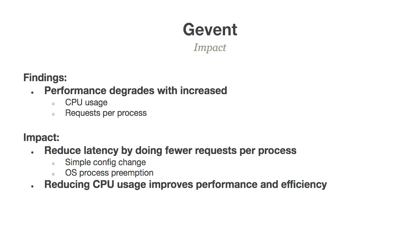What does this mean for Pinterest and coroutine-based systems in general? Performance degrades with increased CPU usage — if you have a single process doing too much CPU work, you're blocking everything else and latency spikes. Performance also degrades with more requests per process, so using more processes is better because the OS has preemption for processes. We bumped the number of processes from being pinned to core count to 1.5x cores, and things improved with a three-character change.